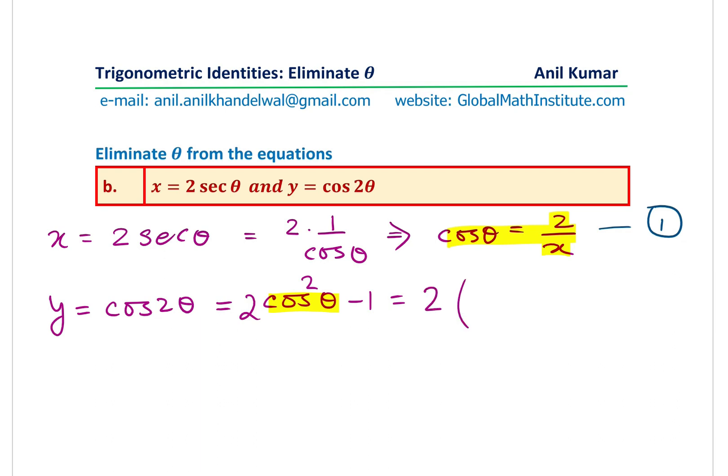So that's the idea. So we write 2 times, so this is 2 over x whole square minus 1. So we get an equation which is y equals to 2 times 4 over x square minus 1, or we have this equation as y equals to 8 over x square minus 1.